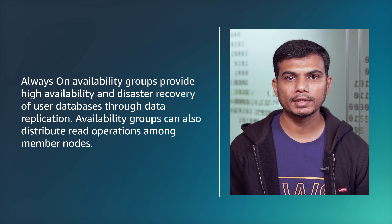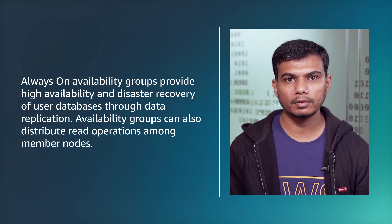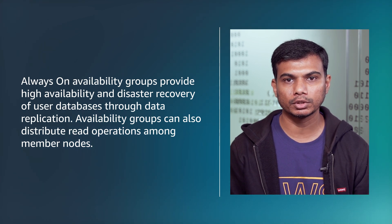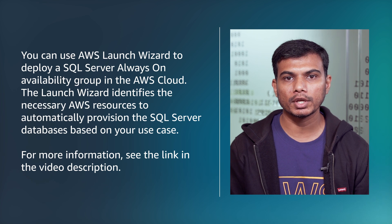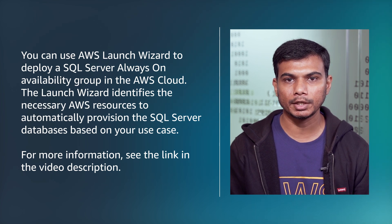Always-On Availability Groups provide high availability and disaster recovery of user databases through data replication. Availability groups can also distribute read operations amongst member nodes. You can use AWS Launch Wizard to deploy a SQL Server Always-On Availability Group in the AWS cloud.